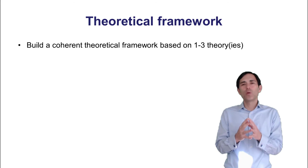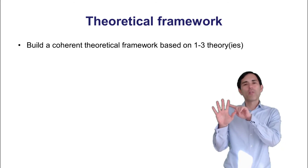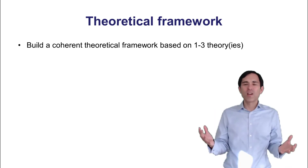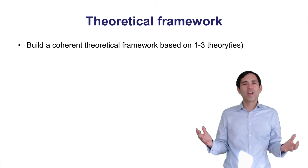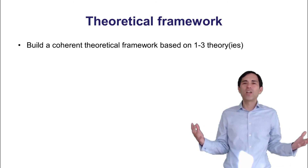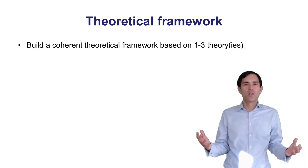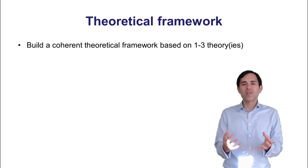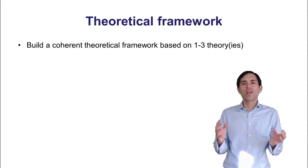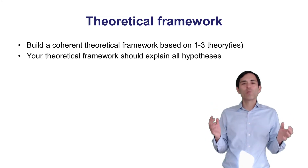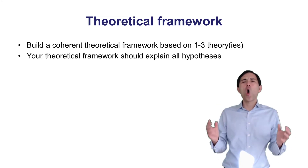The opposite would be having five hypotheses where each hypothesis has a different theory — we would call that fragmented theory, because there's no unified framework. Most reviewers and editors do not like it, because there's no consistency; it's just a random collection of ideas and tests. We want to test a model, write about one consistent story. Likewise, we need a consistent and coherent theoretical framework, and your theoretical framework should explain all hypotheses.